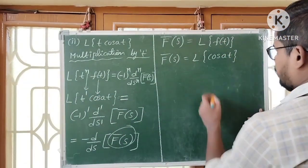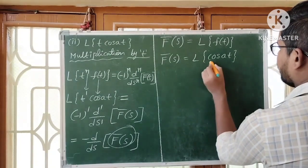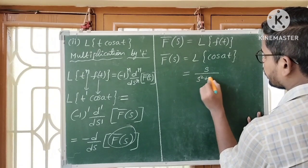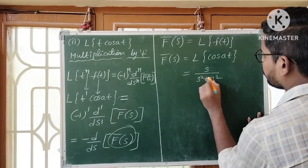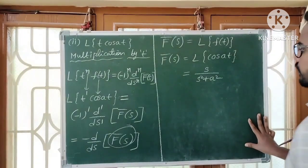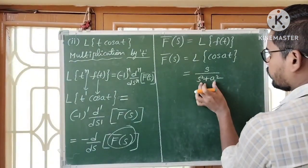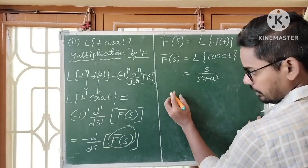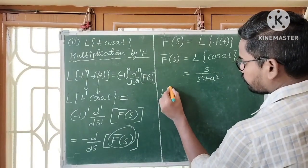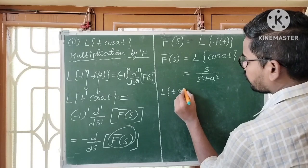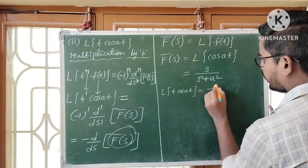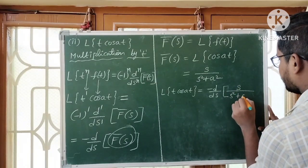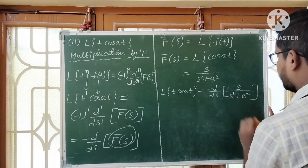The Laplace transform of cos(AT) is S/(S²+A²) — this is the direct formula. So F̄(S) equals S/(S²+A²). Therefore, the Laplace transform of T·cos(AT) equals minus d/dS of S/(S²+A²).